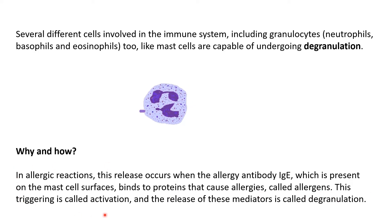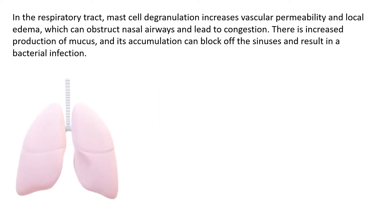The release of these mediators from inside the cells is called degranulation. In the respiratory tract, mast cell degranulation increases vascular permeability and local edema, which can obstruct the nasal airways and lead to congestion.